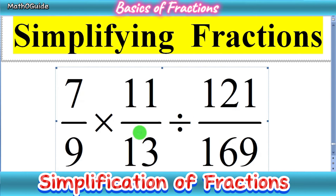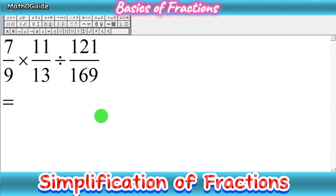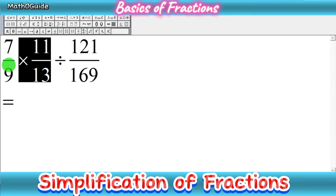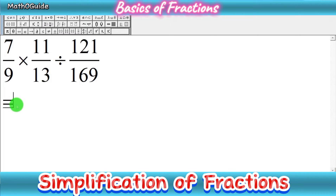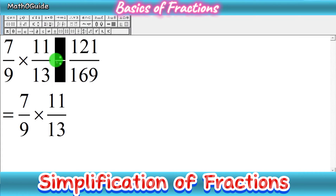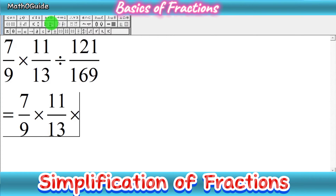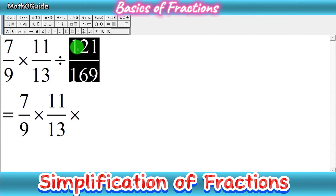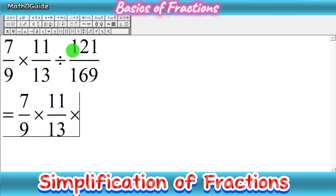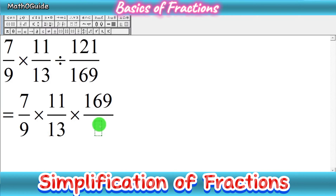So let's start. First of all, you have to rewrite the given fractions. As you know, when we divide fractions, we simply convert the division sign into multiplication. We rewrite the first two fractions being multiplied as they are, then convert the division sign into multiplication. After 11 over 13, we write a multiplication sign and then find the reciprocal of 121 over 169, which is 169 over 121. As you know, for the reciprocal we change the position of numerator and denominator.